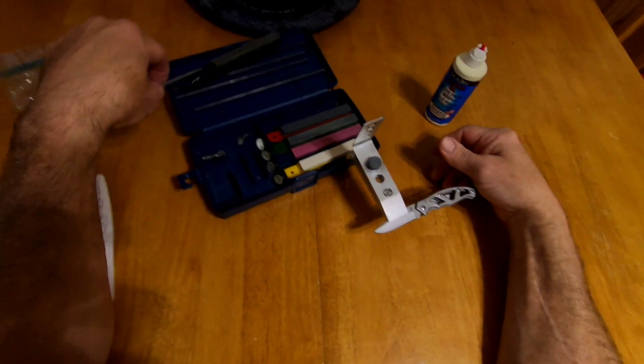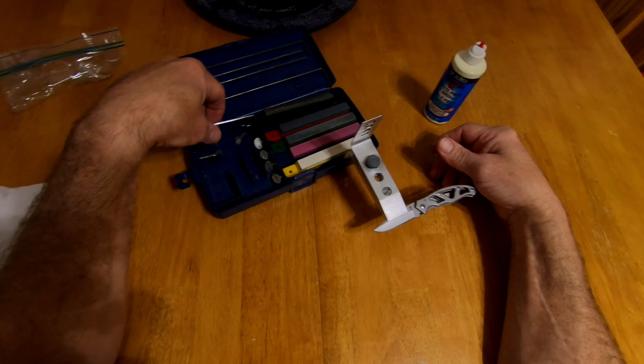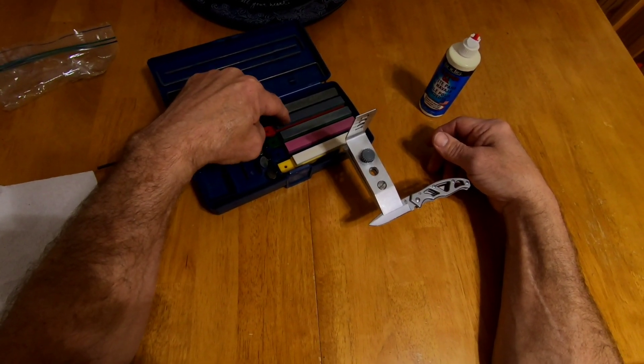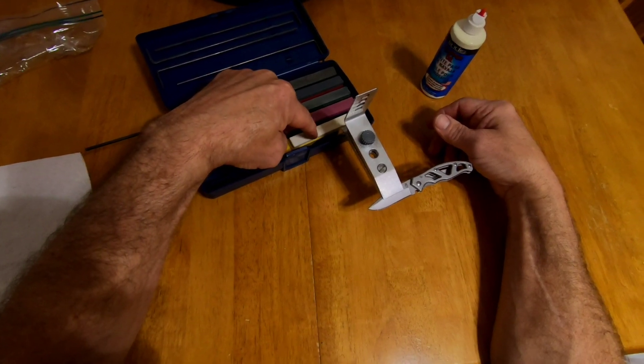But what this is, this is a Lansky Deluxe Knife Sharpening Kit. This has five stones to it: the extra coarse, the coarse, the medium, fine, and the ultra fine.